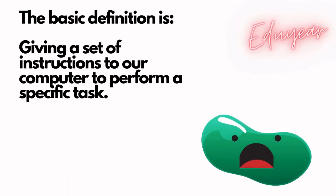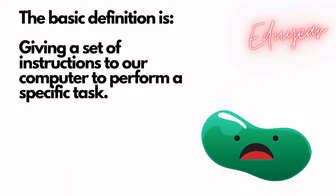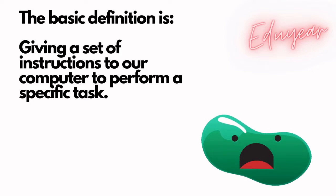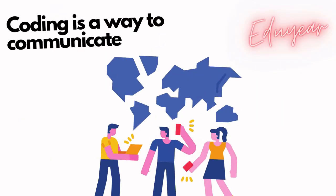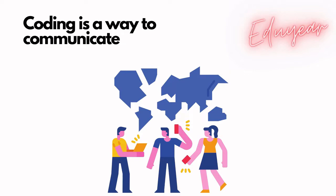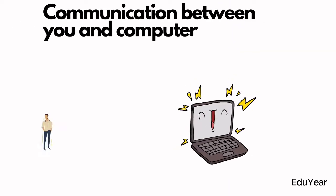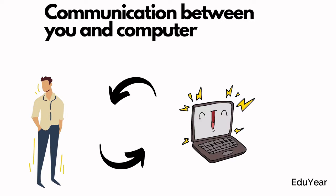What is coding? The basic definition is giving a set of instructions to our computer to perform a specific task. In simple terms, coding is a way to communicate—communication between you and your computers.